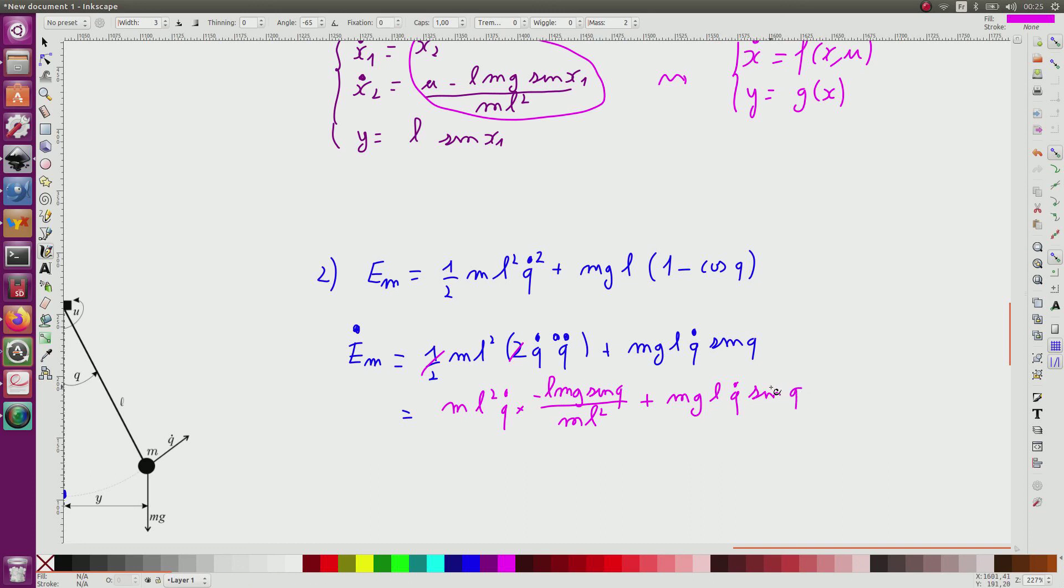So what I have done here is I have written this quantity as a function of the state, and the state is Q and Q dot. And when I write this, since I have the state, this writing is unique. It is not the case if I am allowed to put other things that are not the state, such as for instance Q dot dot. And this simplifies, and I can see that this is equal to zero.